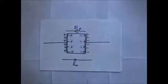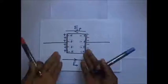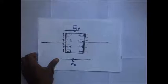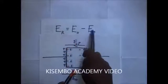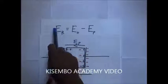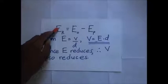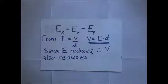We therefore have two fields acting in opposite directions in the same space, giving us a resultant field. The resultant field ER is given by E₀ minus EP — the field due to the plates minus the field due to polarization of the molecules. This effective resultant field ER will be much less than E₀ alone.